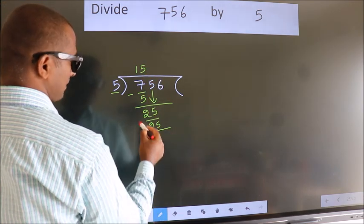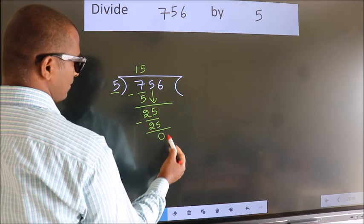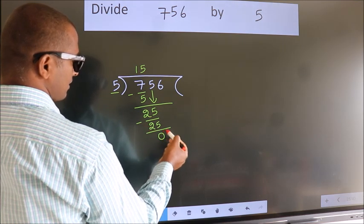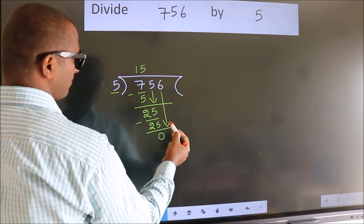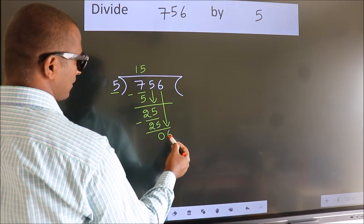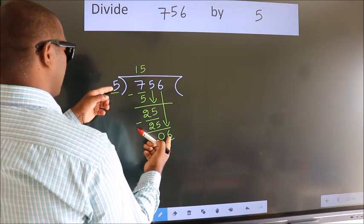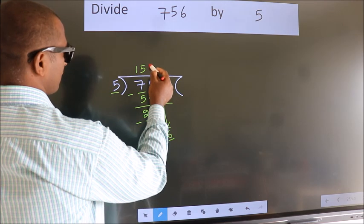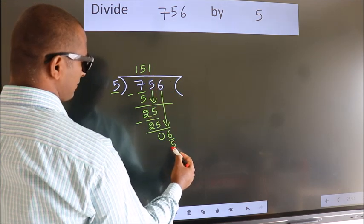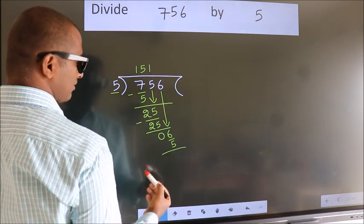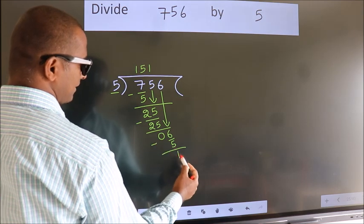Now, we subtract. We get 0. So, after this, bring down the beside number. So, 6 down. So, 6. A number close to 6 in 5 table is 5 once 5. Now, we subtract. We get 1.